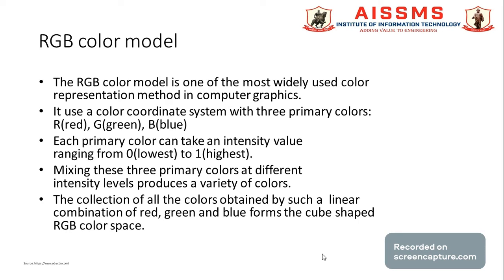Cone cells of photoreceptors are the part of the human eye responsible for color perception. In the RGB color model, the combination of primary colors creates different colors that we perceive by stimulating different cone cells simultaneously.